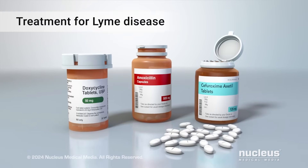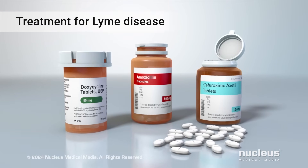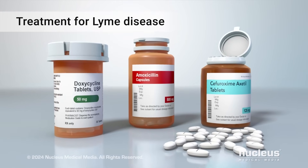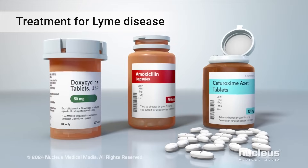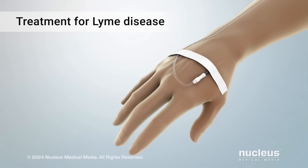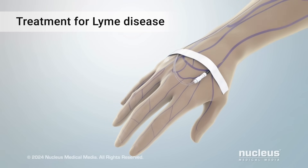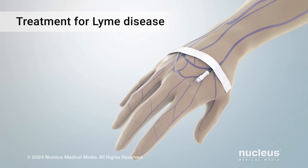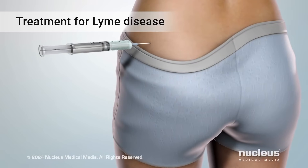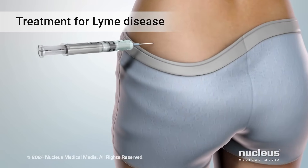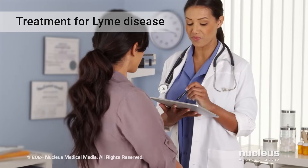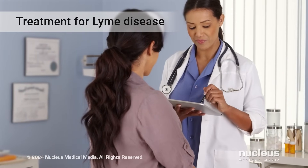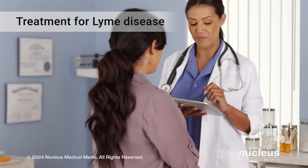If you have Lyme disease, your healthcare practitioner may prescribe oral antibiotics. For severe symptoms, you may need an injection of antibiotics through an IV or in a muscle. It's important to be treated as early as possible for the best chance of recovery.